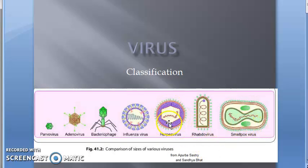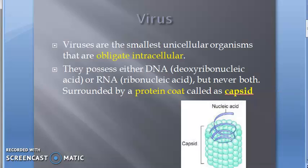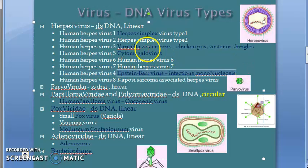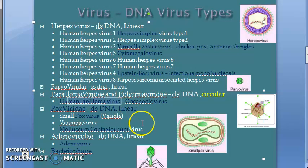Under herpes, we had herpes simplex, varicella zoster which causes chickenpox, shingles, zoster, cytomegalovirus, then Epstein-Barr virus. Epstein-Barr virus causes infectious mononucleosis. Then we saw the human papillomavirus, which is the only one to have circular double-stranded DNA.